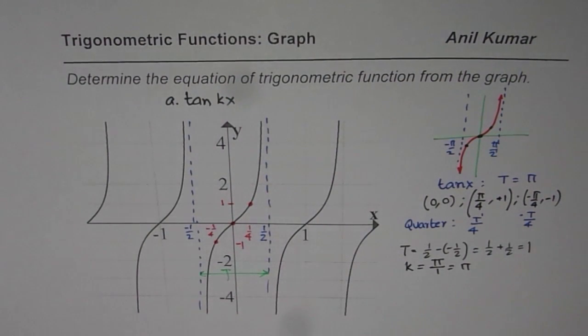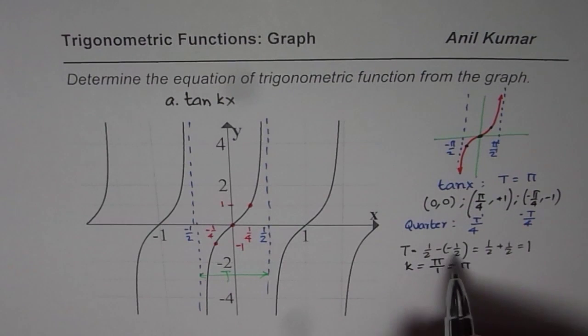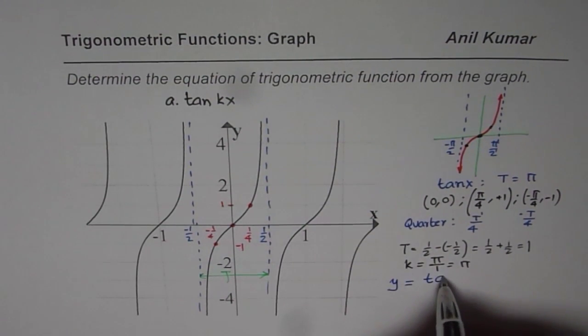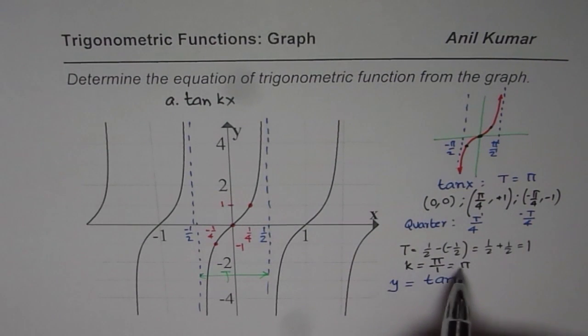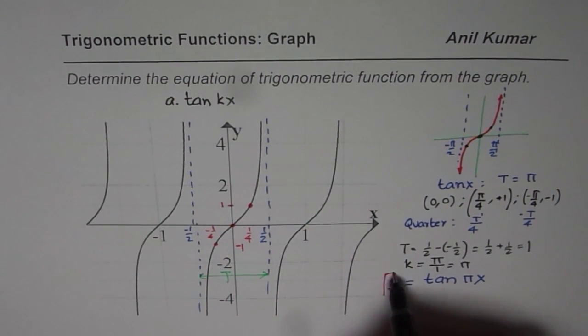Do you see that? That simply means that it has not been vertically stretched. Since it has not been vertically stretched or translated horizontally or vertically, now we can write our equation as y equals to tan of - and k value is π - so we can write πx. So that gives us the equation for the given graph.